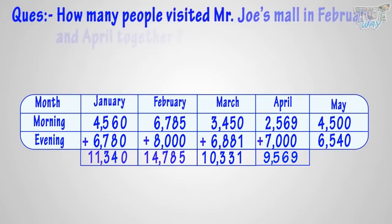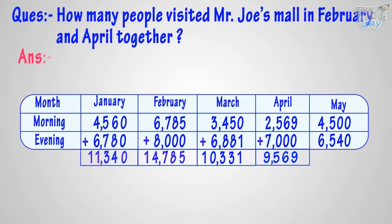How many people visited the mall in February and April? For this, we will add the number of people we calculated from February and April. February: 14,785. April: 9,569.